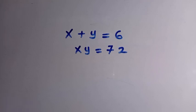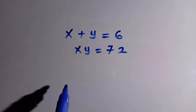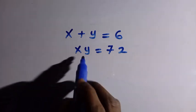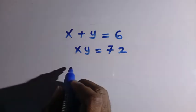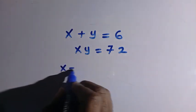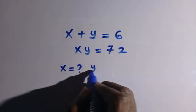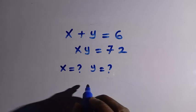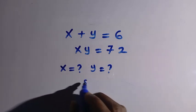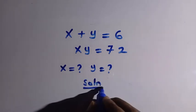Good day viewers, you are welcome. How to solve this nice system of equations? We are given x plus y equals 6 and xy equals 72. So we want to find the value of x and the value of y that satisfy these equations. We have two equations and we consider the solutions from here.